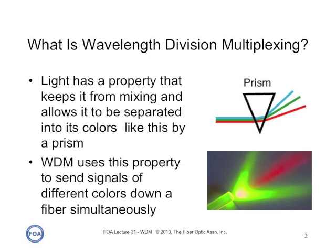Wavelength division multiplexing uses the fact that light can be traveling down the fiber simultaneously from many different colors of light without mixing or interfering with each other. We've seen this all the time by light being dispersed by a prism, where all the different colors of light are able to move through the air simultaneously until they reach the prism, which separates them into their component colors. But we can do exactly the same thing in an optical fiber.